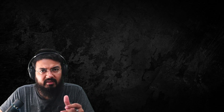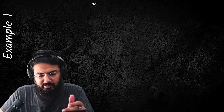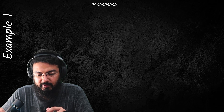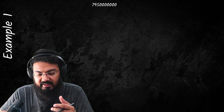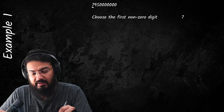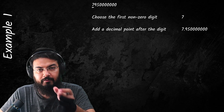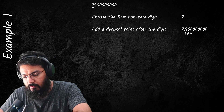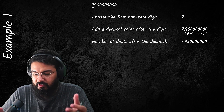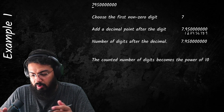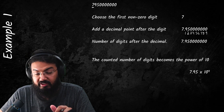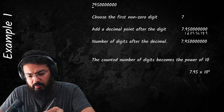Let's work through a question. Take 795 followed by seven zeros — writing this value again and again would be very inconvenient, so let's convert it to standard form. Choose the first non-zero digit, which is 7. Then count the number of digits after 7: 1, 2, 3, 4, 5, 6, 7, 8, and 9 digits. That number of digits becomes the power of 10, so the final answer is 7.95 × 10⁹.